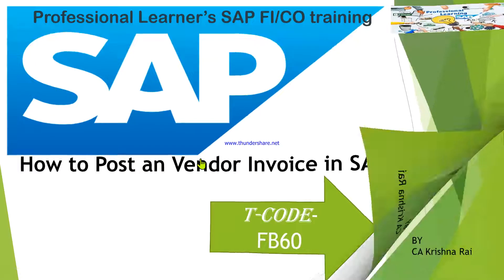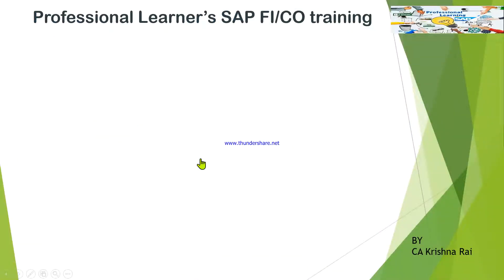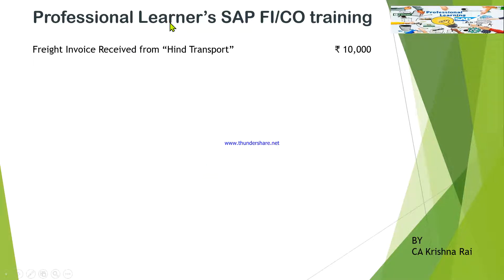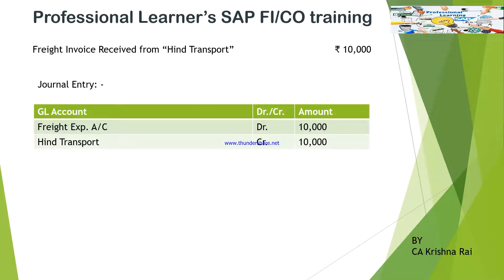First we will discuss the business transaction and then pass it in SAP FI. The business transaction is: freight invoice received from Hinter Transfer. We have received a freight invoice for ten thousand rupees. The accounting entry would be freight expenses account debited ten thousand rupees, and Hinter Transfer credited ten thousand rupees. This is your accounting entry for a vendor invoice.